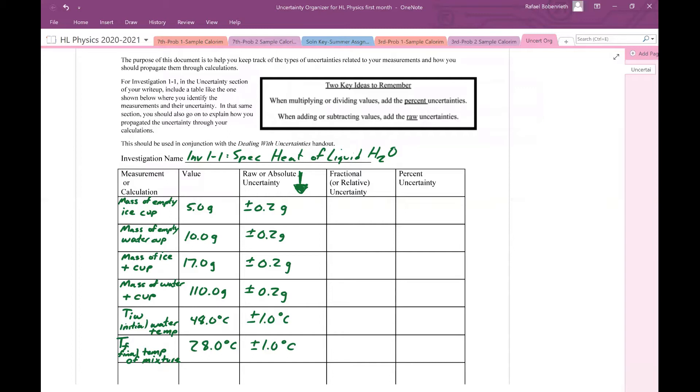Assuming we have this information, we're going to go on from here and figure out how to propagate uncertainty. A data table like this for this first lab of the year should appear in your lab report, obviously with your data. Let's go through and recall how we're going to calculate these things. Fractional uncertainty is really just the raw uncertainty divided by the value.